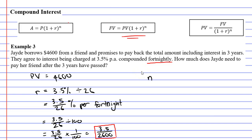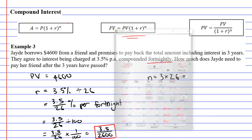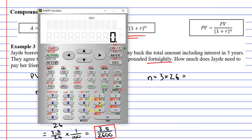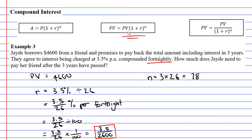We also need to find n, the number of time periods, which is 3 years. We're doing it fortnightly, so we need to times our 3 years by 26, since there are 26 fortnights in a year. Bringing up our calculator, 3 times 26 gives us 78. We've got all the values we need to plug into the formula.